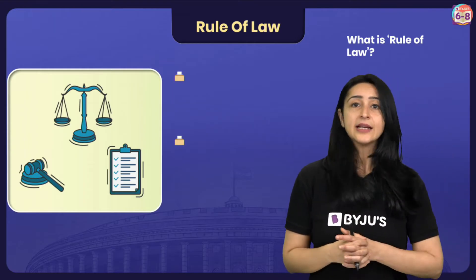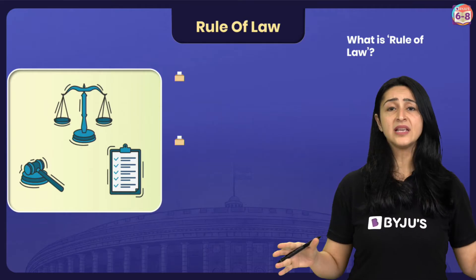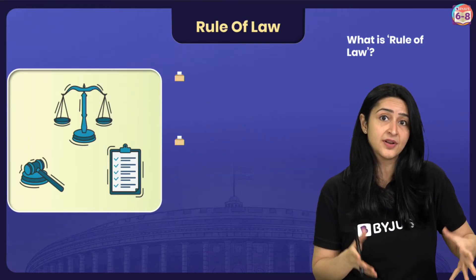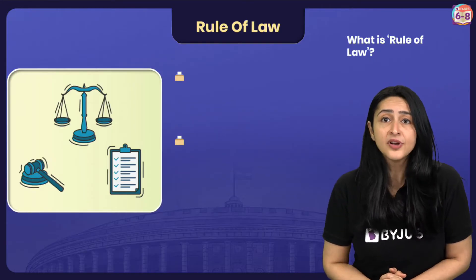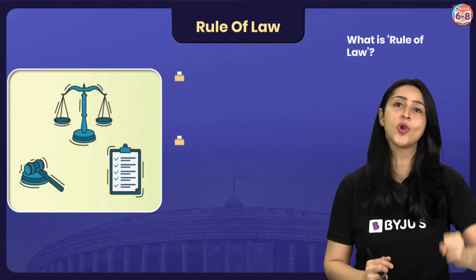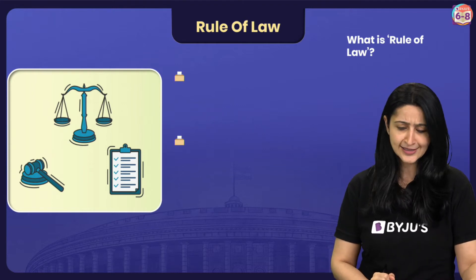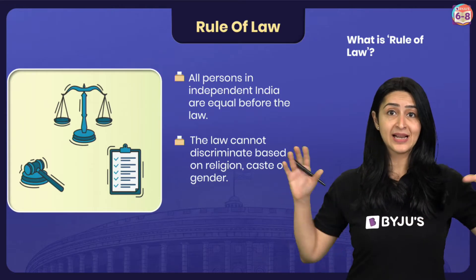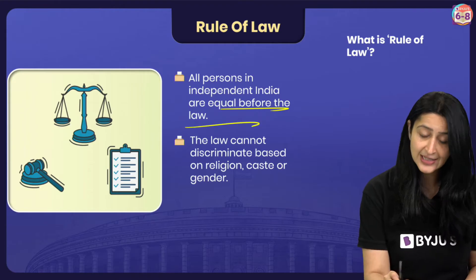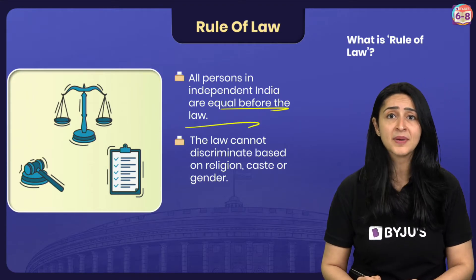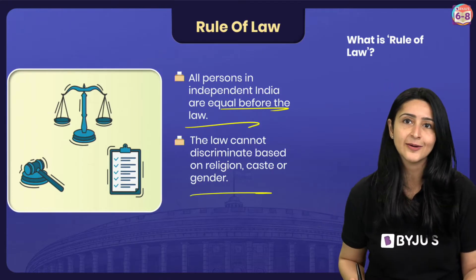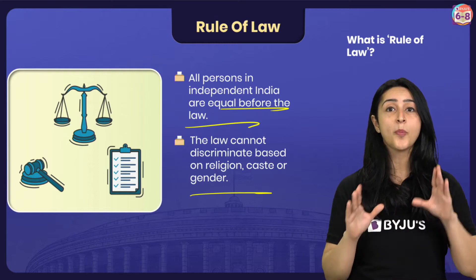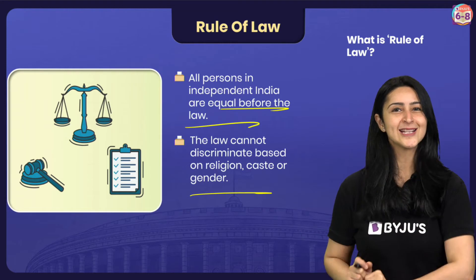Now, after India gained independence, the members of the Constituent Assembly were very clear that they did not want the unfair practice of power that had prevailed during the British period in independent India. So they made several arrangements in the constitution to establish the rule of law, which simply states that all people in India are equal before the law. The laws cannot discriminate between people on the basis of caste, colour, religion or even gender. All laws are applied equally to all — no one is above the law.